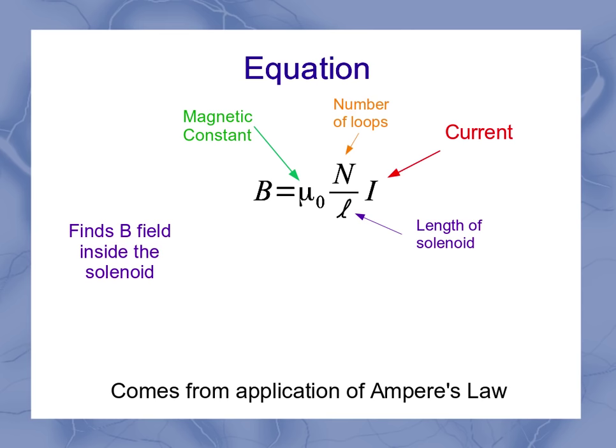Some texts will put this as a capital L as just a regular letter L. Some of them will show it as the lowercase with more of a cursive L. This quantity, N over L, is sometimes given as a single thing, the turns per length or the loops per length of wire.